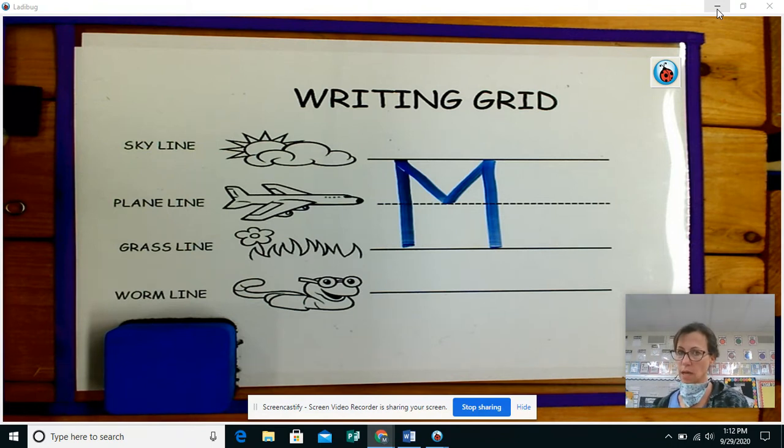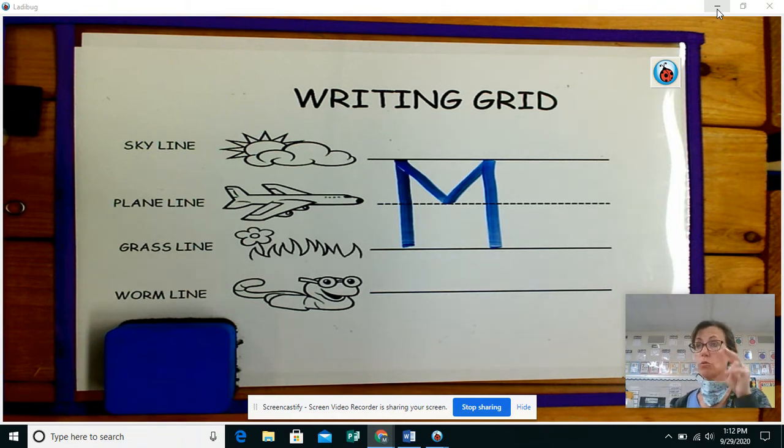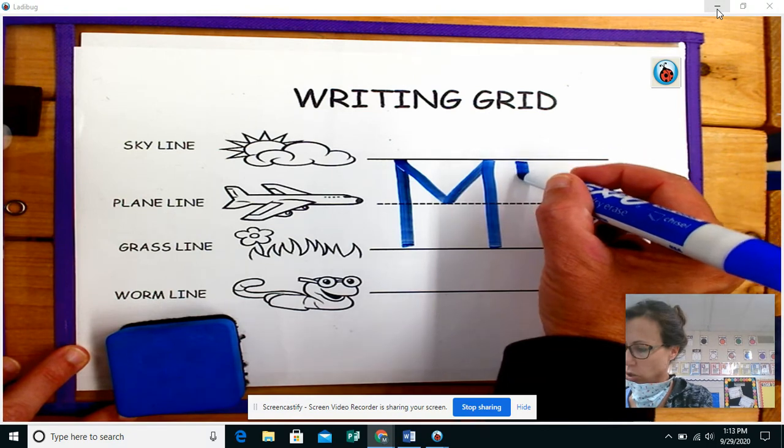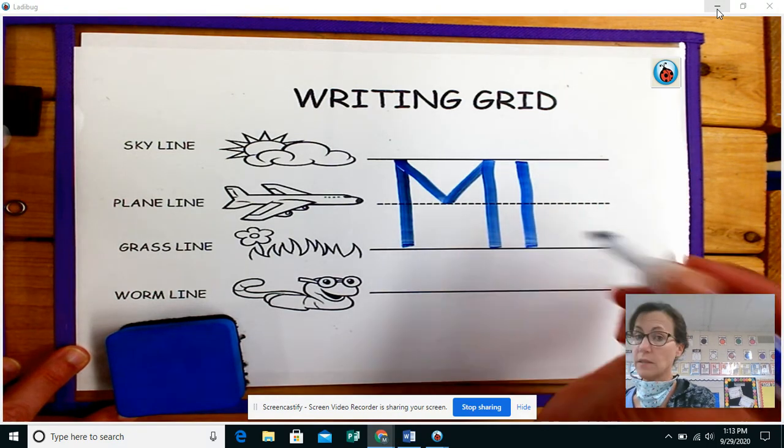I also want to show you sometimes in the wonders book, we use the yellow book. You will see M written a different way. So there really are two choices and you can do it either way. So we start at the skyline, always at the skyline, go down to the grass line. We still pick up our pencil.